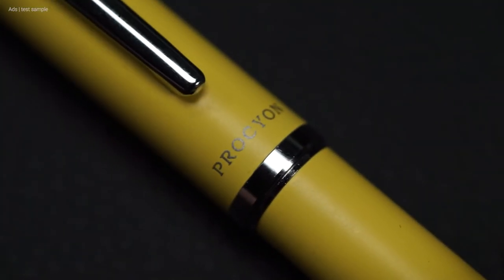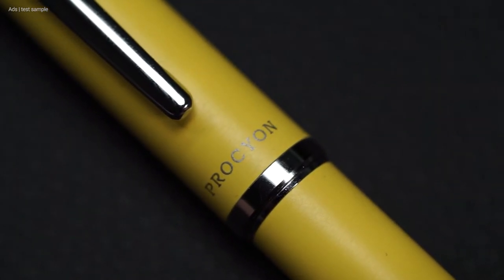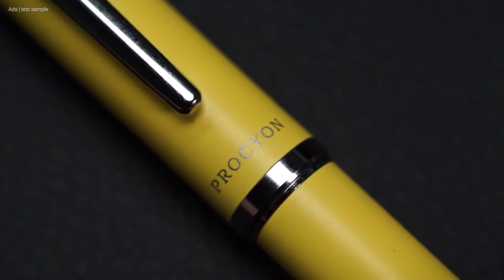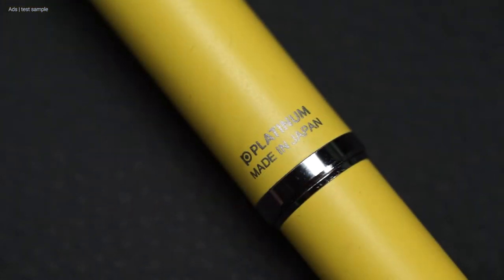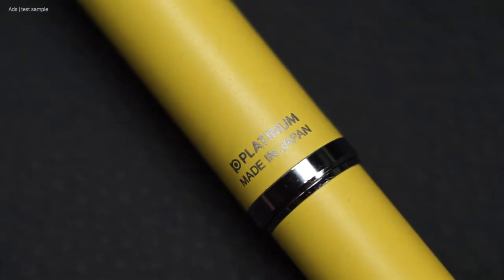A few details. First, between the clip and the end of the cap we have the Procyon lettering printed in silver. On the back of the cap, Platinum, made in Japan, is printed.